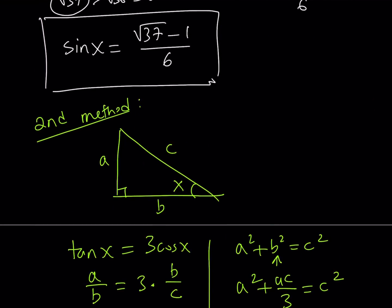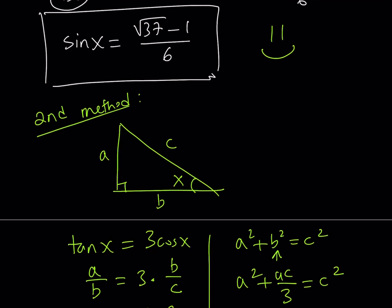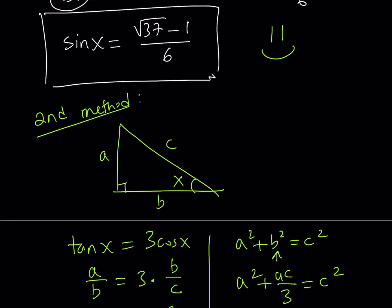So the answer is square root of 37 minus 1 over 6, and this brings us to the end of this video. Well, thank you for watching. I hope you enjoyed it. Please let me know. Don't forget to comment, like, and subscribe. I'll see you tomorrow with another video. Until then, be safe, take care, and bye-bye.